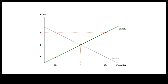When more is sold at higher prices, we say the quantity supplied has increased. When less is sold at lower prices, we say the quantity supplied has decreased.